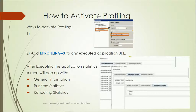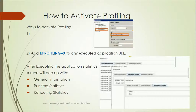There are two ways to activate profiling. First, in the preferences of the Design Studio application script settings, there is an option to check 'Activate for runtime profiling.' Second, you can append '&profiling=X' to the executed application URL. Once profiling is activated, whenever you execute the application you will see three sets of statistics: general information, runtime statistics, and rendering statistics — showing time taken for each step.